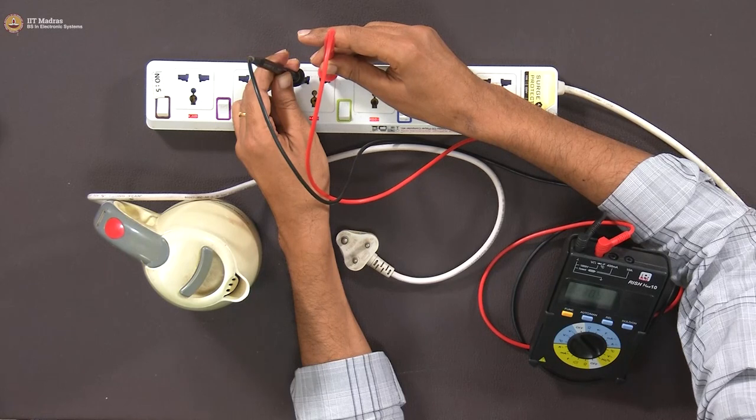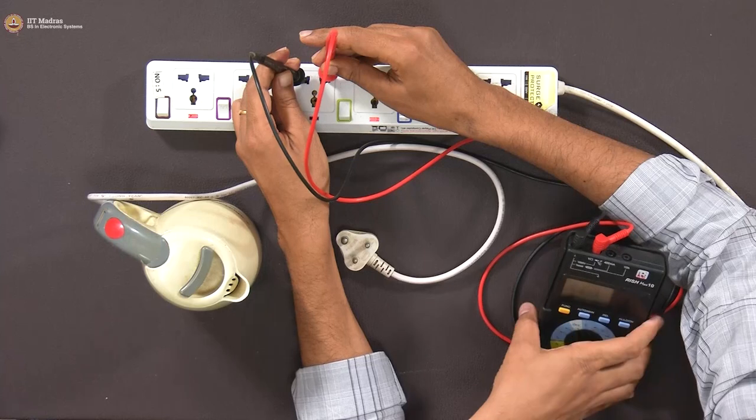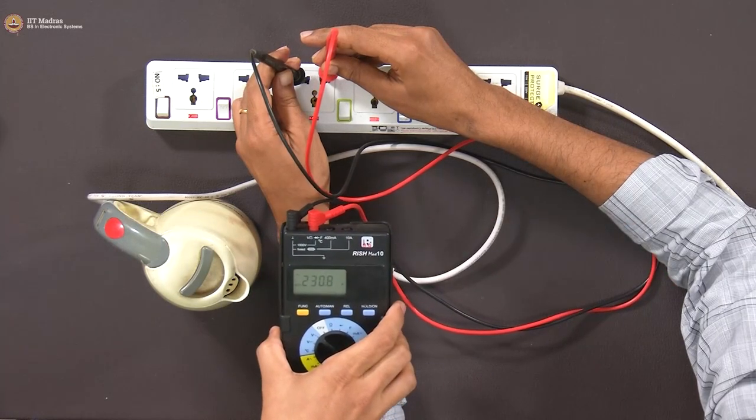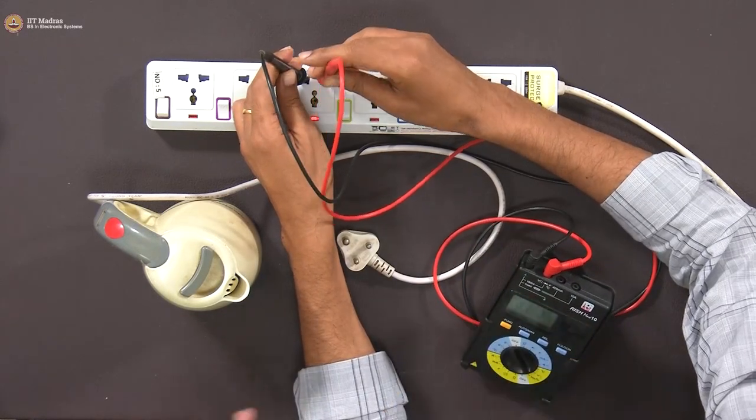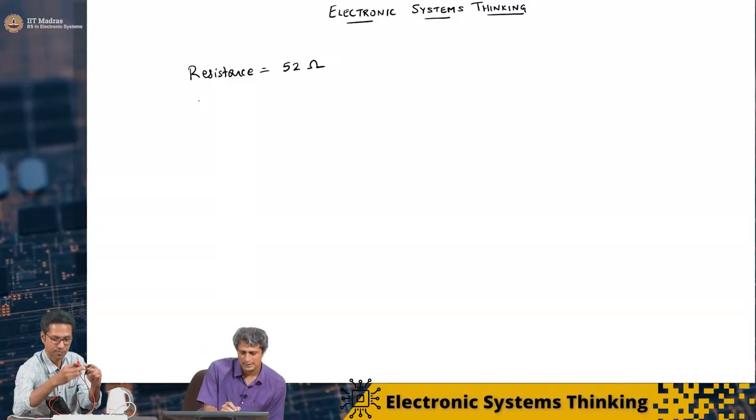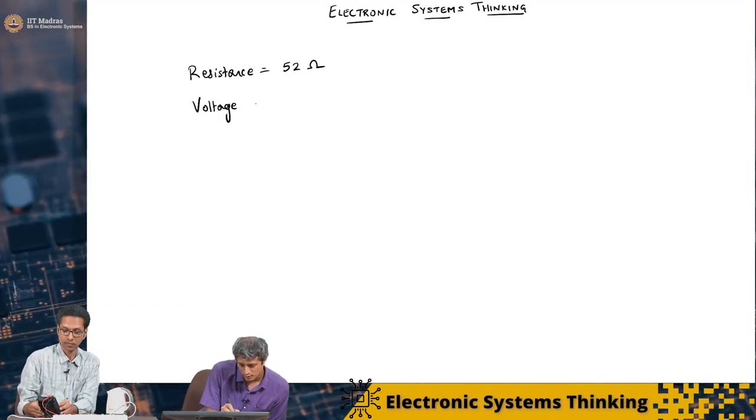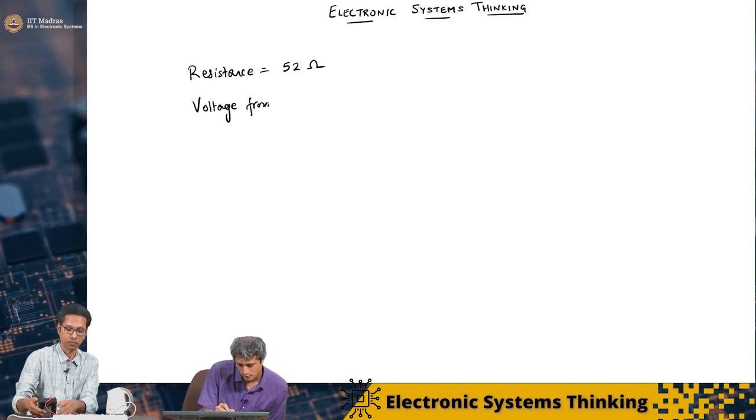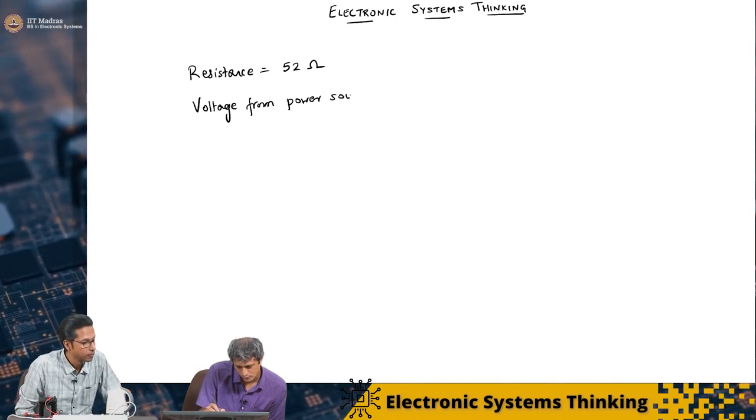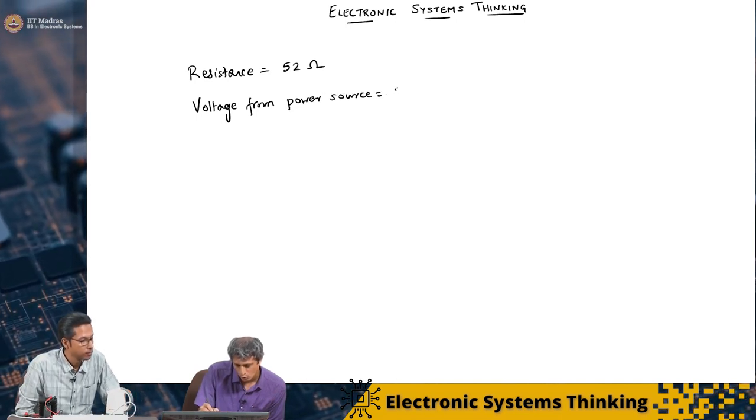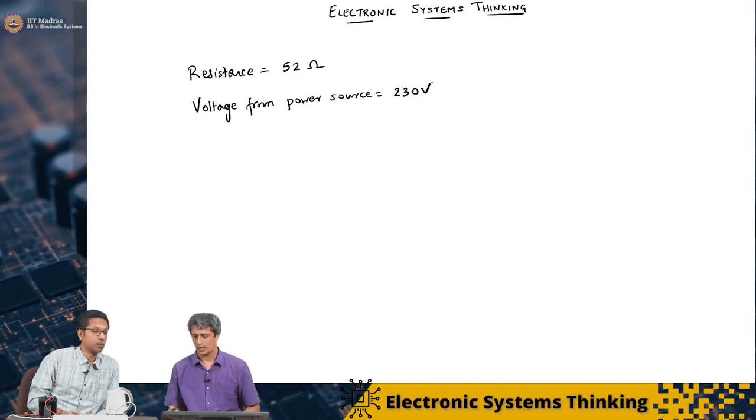Please be very careful not to do these measurements at home, because they are very dangerous. You see that this is about 230 volts, okay? Of course, this is an alternating current and all that. We will come to that. Let us just note this down. Voltage from power source, 230 volts.